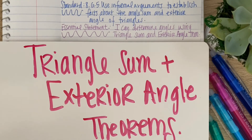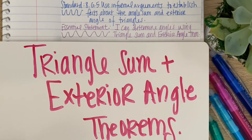Hey y'all, Ms. Z here. Today's lesson is going to go over two theorems: the triangle sum theorem and the exterior angle theorem. All we're going to be doing today is finding the unknown angles. Our essential statement is: I can determine angles using the triangle sum and exterior angle theorem.